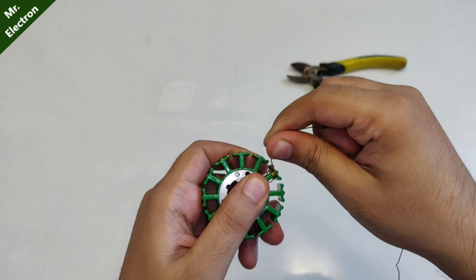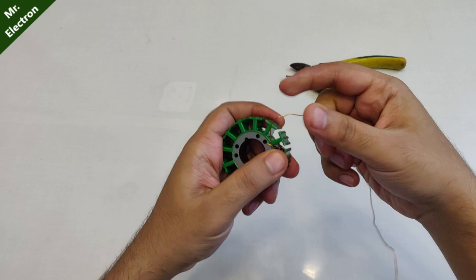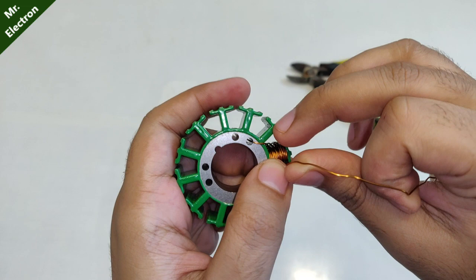So guys, I have given it 25 turns on this pole and seems like that this one is full and I have to shift to the second pole, the one next to it. Doing that, 25 turns on each pole, that's what I want to say.